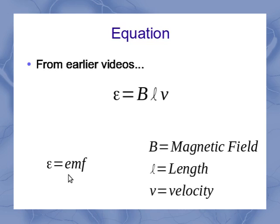Note that in this equation, we had to have the length be the distance perpendicular to the magnetic field and the velocity. And the velocity also had to be perpendicular to the magnetic field.